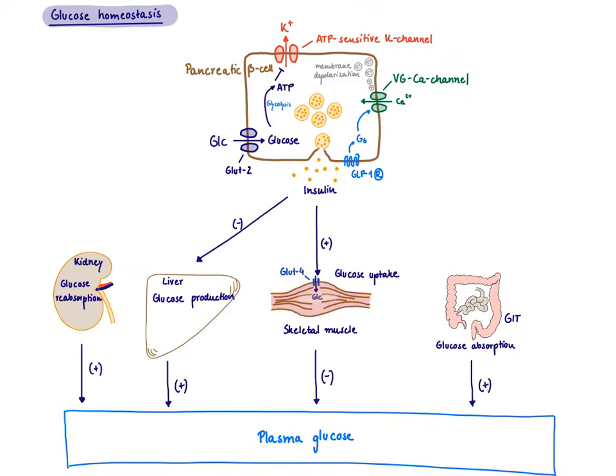Once insulin is released, what are the target organs? One example is the skeletal muscle. In skeletal muscle, insulin will facilitate the translocation of GLUT-4, so there will be more of these transporters that can take up glucose. As we take more glucose up into the skeletal muscle, this decreases our plasma glucose levels.